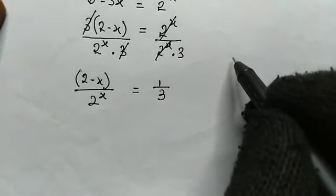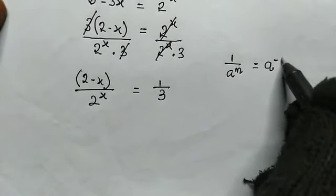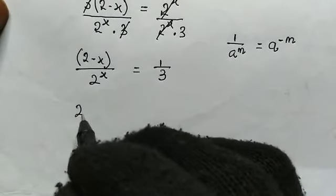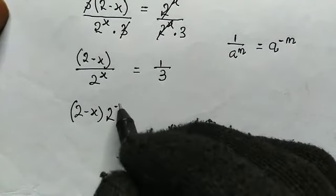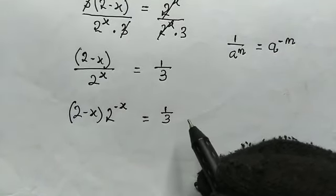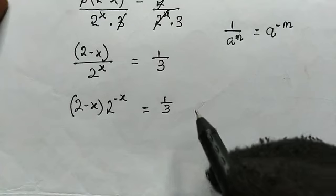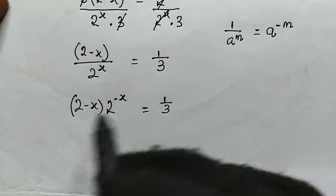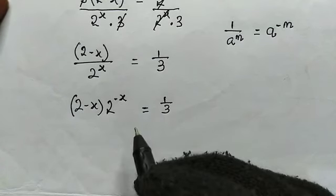So here we have 2 minus x divided by 2 to the power of x, this equals 1 divided by 3. You can see the great transformation now. Now let us take note of this: 1 divided by a to the power of m is the same as a to the power of negative m. So from here, this will be 2 minus x multiplied by 2 to the power of negative x, this equals 1 divided by 3.